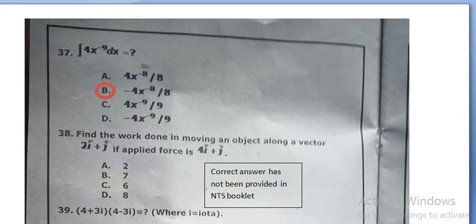Integration 4x power minus 9 dx is equal to minus 4x power minus 8 divided by 8.